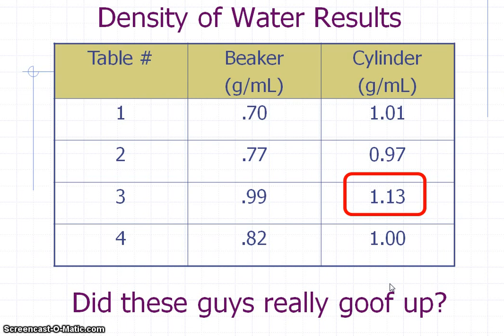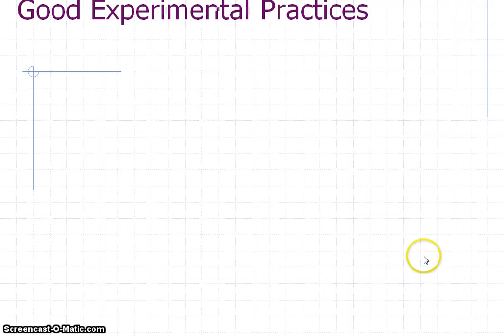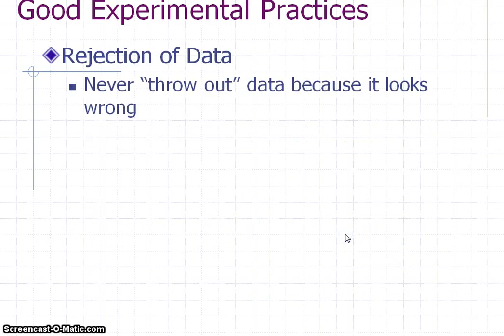We might be thinking, man, I think we just messed up on this. Our mathematical sense might tell us, well, let's just ignore that number, let's just throw that number away because obviously something went wrong. But we need to be careful in doing that. It's okay to think that and to analyze it, but as scientists we've got to be really careful with data. You never want to fudge your data, nor do you ever want to just throw out something just because it looks wrong.